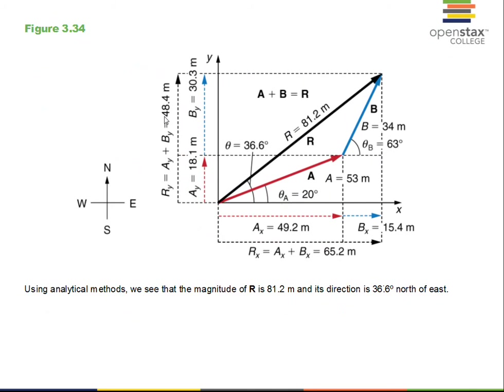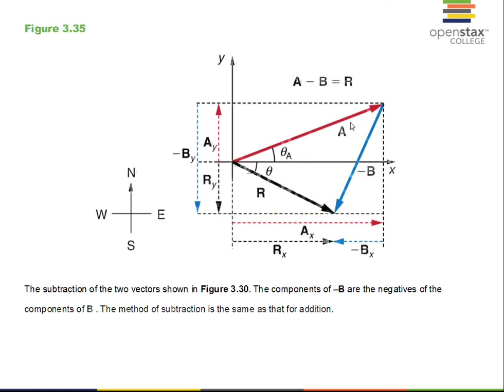For vector subtraction, we still find components using sines and cosines. Looking at the diagram, when we add the x-components we notice a shorter result than Ax alone, which tells us we're doing subtraction. Vector B points to the left along the x-axis, so its x-component is negative. Similarly, B is angled downward, so its y-component subtracts from Ay.